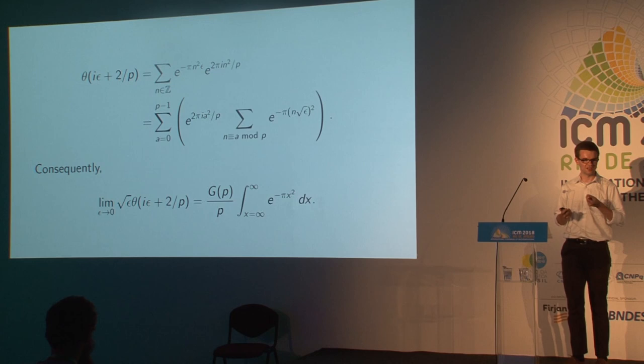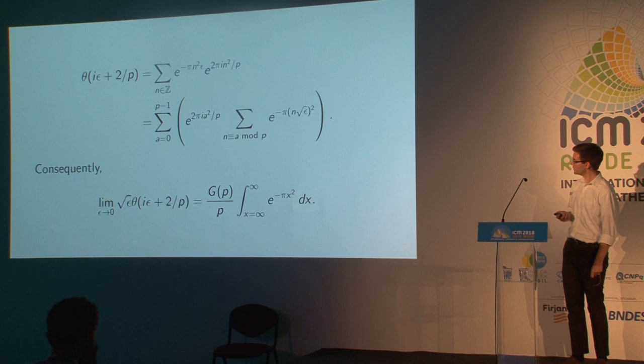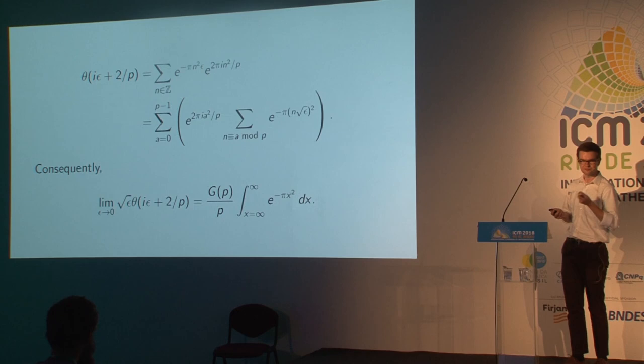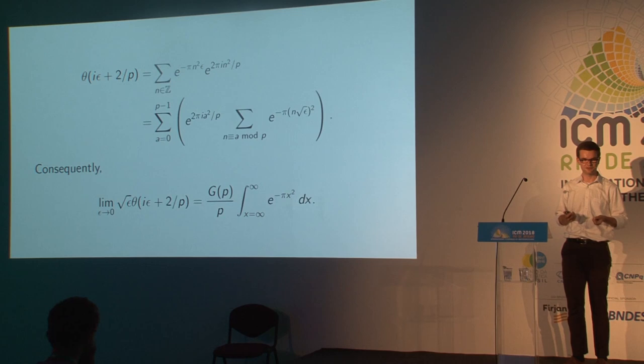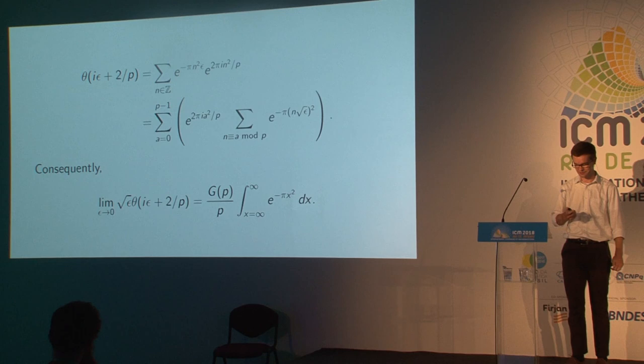We look at the value of the theta function at a particular point i·ε + 2/p, where ε is a small positive real number. Plugging that into the definition gives the first line. If you group n according to its residue class modulo p, you see one term — e^{2πi a²/p} — which looks like what appears in the quadratic Gauss sum, and a second term which looks like a Riemann sum for the integral of e^{-πx²}, once you rescale by p·√ε. If you multiply by √ε and take the limit, you get the Gauss sum times something you understand.